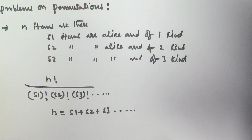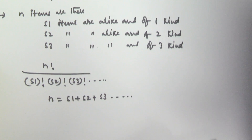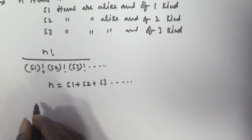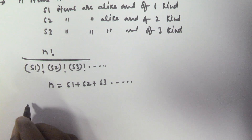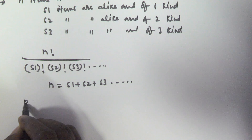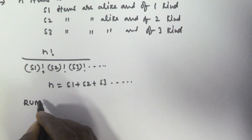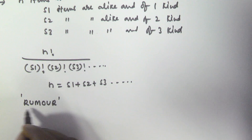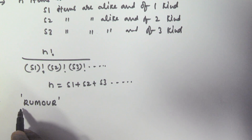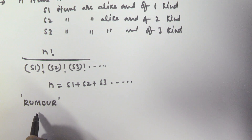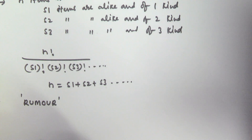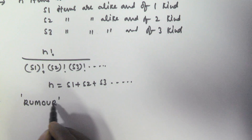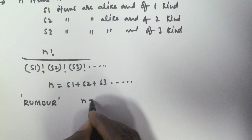Based on this, let us examine one example problem. How many different ways can we arrange the letters of the word 'Ruma'? Looking at the letters of this word, there are six letters in total, so our N value is equal to six.